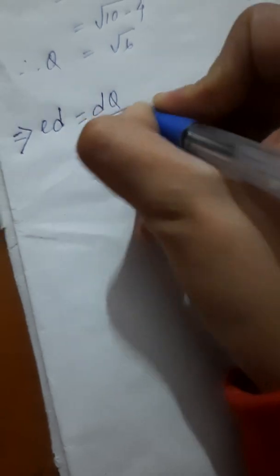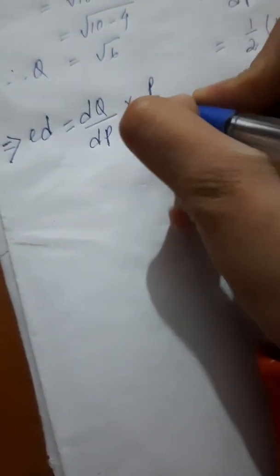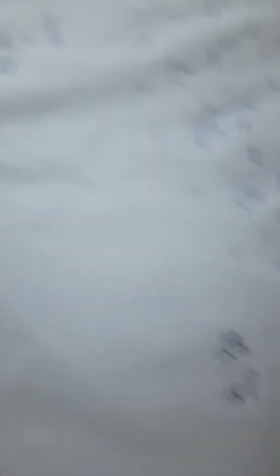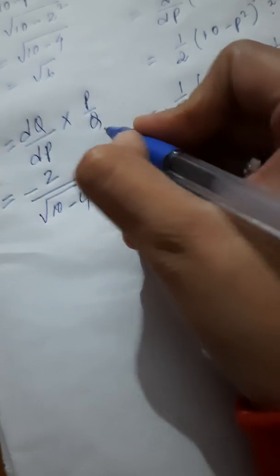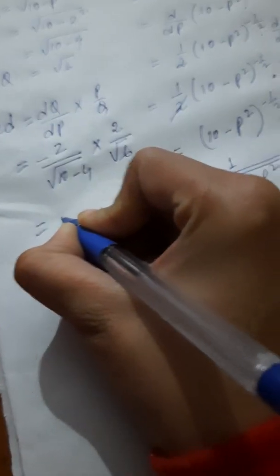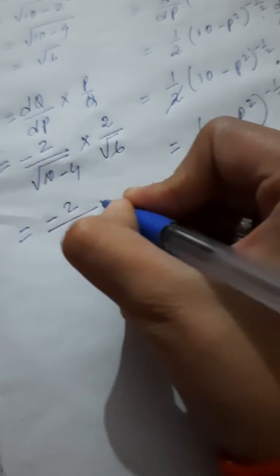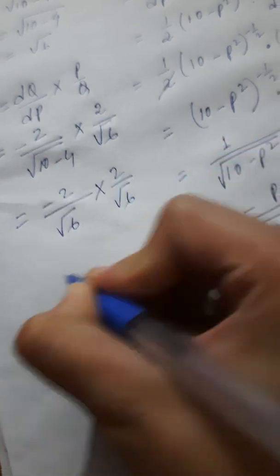Now, coming to our equation, we have ed equals dq by dp times p by q. So, dq by dp we have got minus 2 by root 6, times p is 2, and q is root 6.